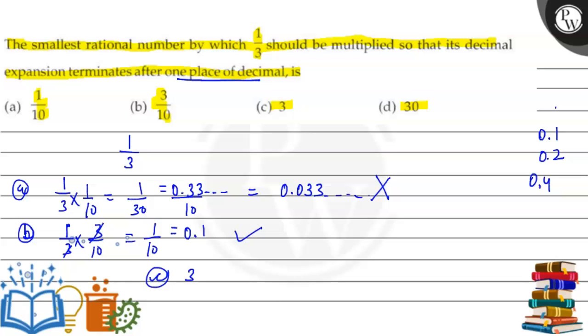For option (c) 3: 1/3 multiplied by 3 gives 1. This is not 1 decimal. So the correct option is (b). (b) is the correct option. The suitable option for this question is option (b).